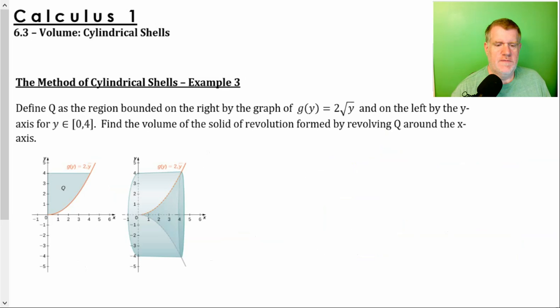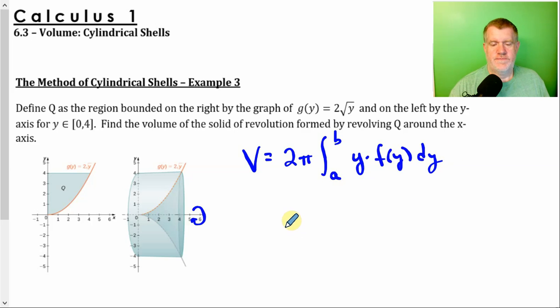All right. Another example. This time, we'll rotate around the x-axis. Well, just like with the disk and washer method, if we're changing the axis, we just change the variables. We're just going to put it in terms of y instead of x. That's all.